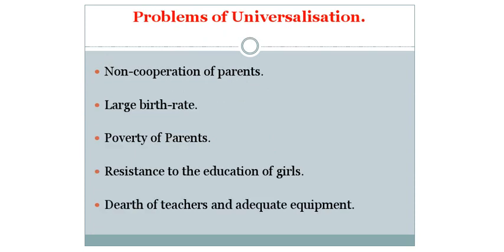Now, the problems of universalization. Number 1: Non-cooperation of parents. Most of the parents in India are illiterate. They do not bother about the education of their children, as they do not cooperate with teachers and refuse to send their children to school. Number 2: Large birth rate. All efforts to make primary education compulsory and free are being frustrated by the tremendous increase in population. In spite of enrolling vast numbers of children, the explosion of population does not allow us to improve the condition.